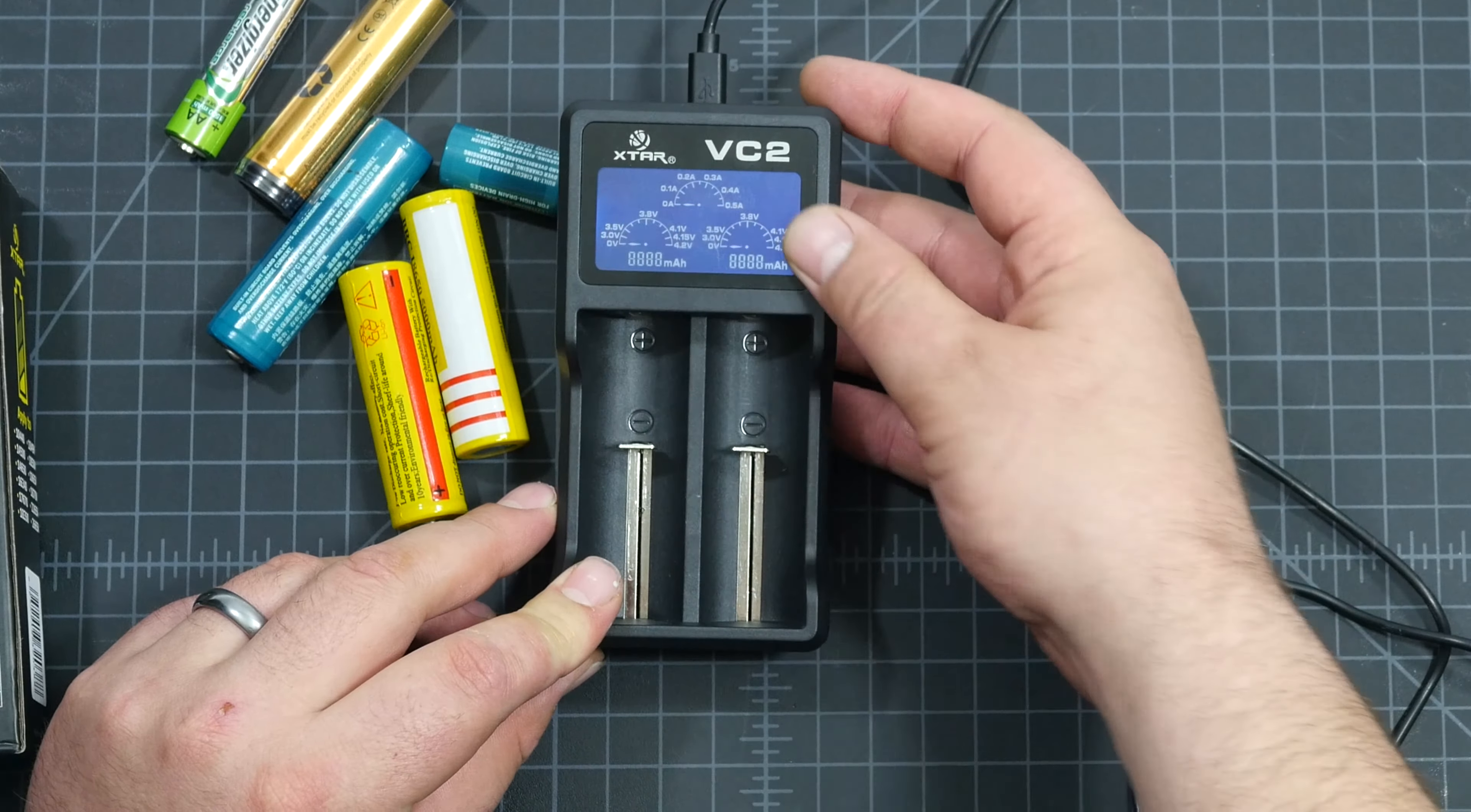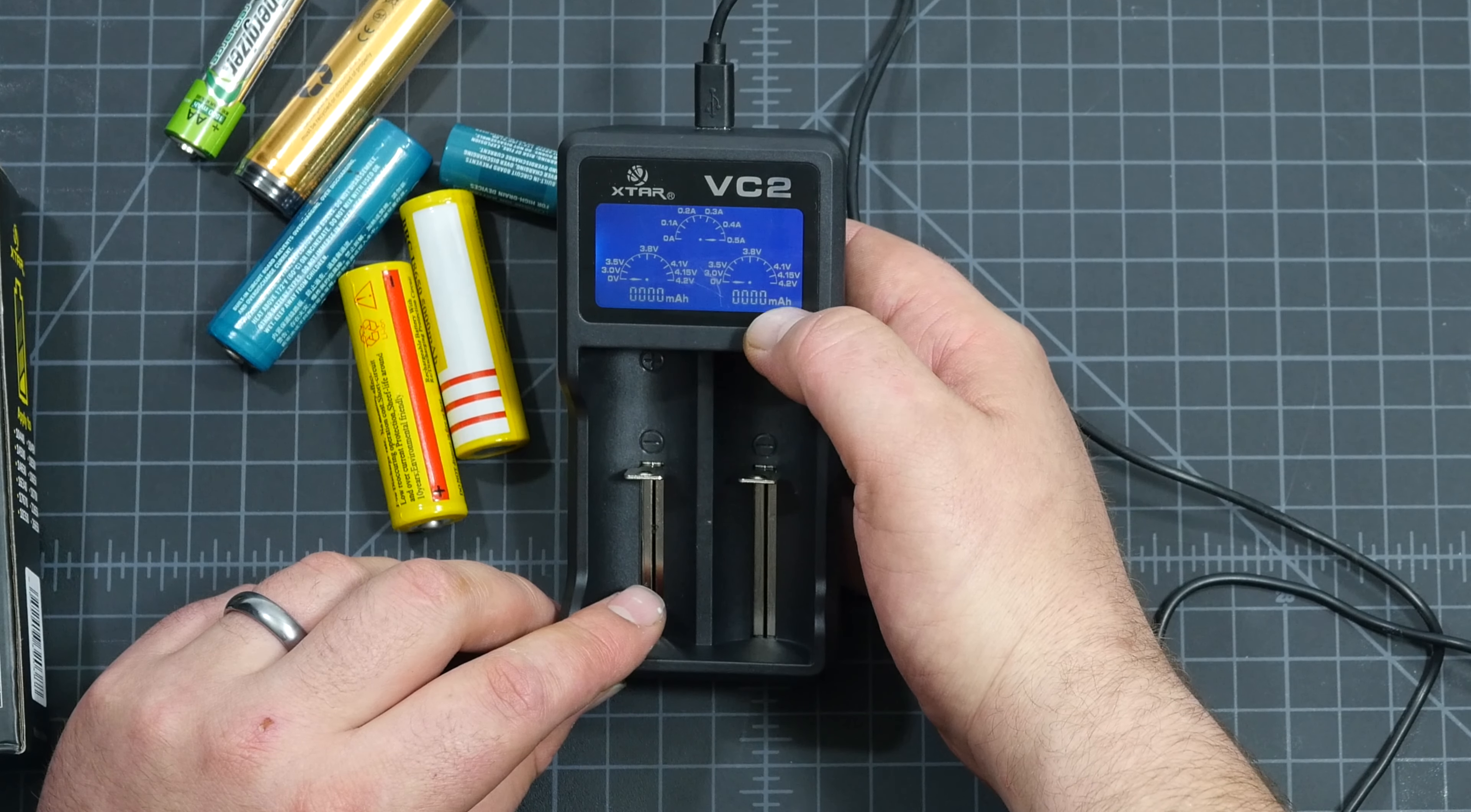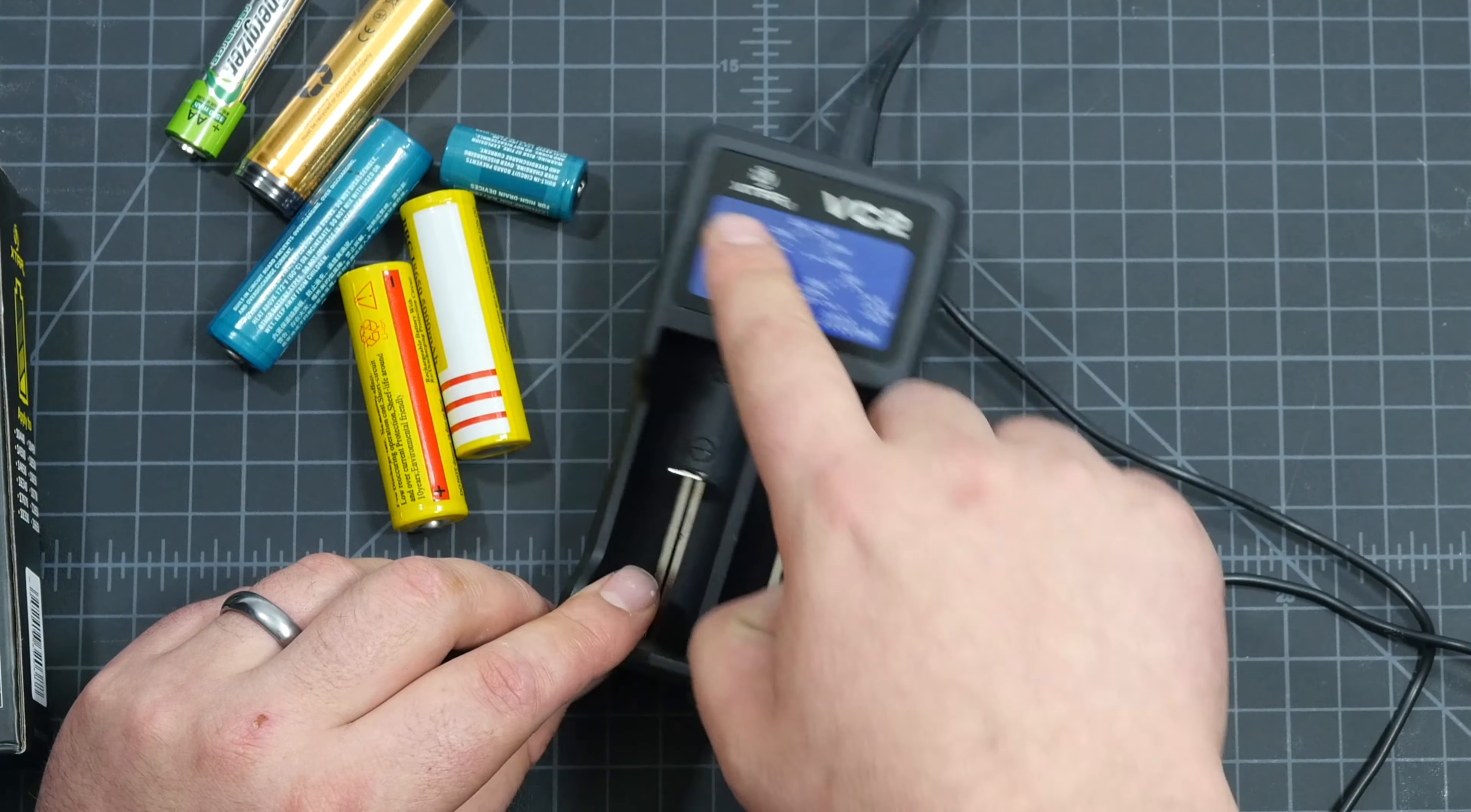So you'll see this nice LCD screen right here and you can see it reads 000 milliamp hours and then on this side 000 milliamp hours. And then we have zero through 0.5 amps and then we have the voltage of the batteries.